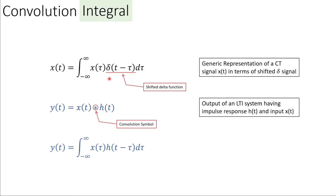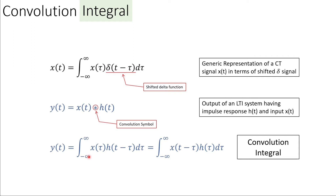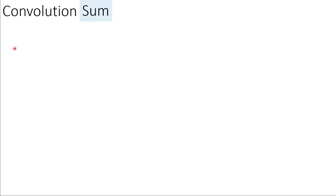On similar lines, we can write x as the input and h as the shifted impulse response of the system. This is the integral of the convolution and we call it the convolution integral. We can represent it in two different ways: x(τ) times h shifted by τ, or we shift the input function by τ and keep the impulse response as it is. The answer to both methods will be the same.